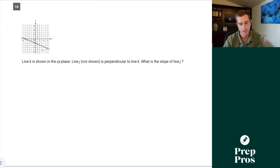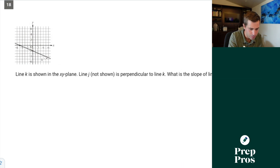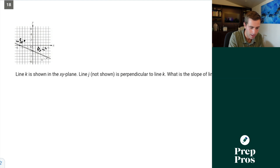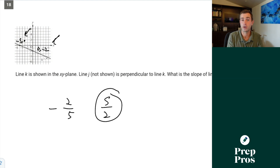Number eighteen: line k is shown in the xy plane. Line j is perpendicular to line k — what is the slope of line j? We need the negative reciprocal of line k's slope. Reading the graph, the points are negative 5 comma 0 and 0 comma negative 2, giving a slope of negative two-fifths. Flip the fraction and flip the sign for the perpendicular slope, giving us five-halves.